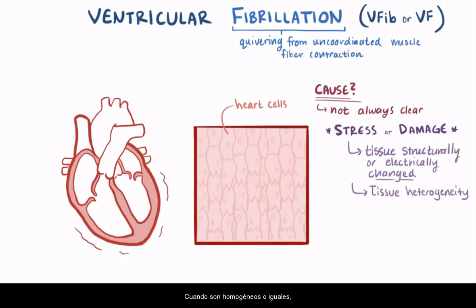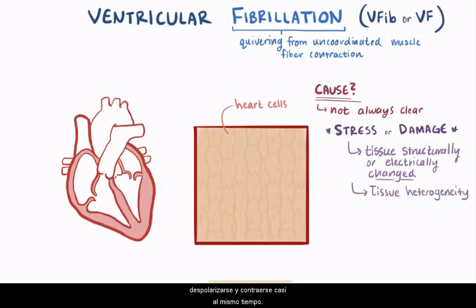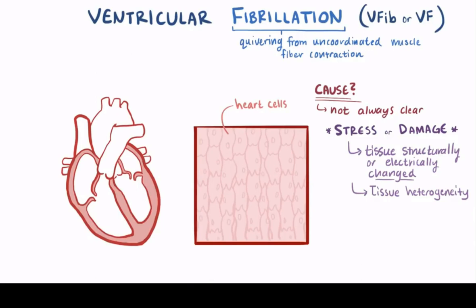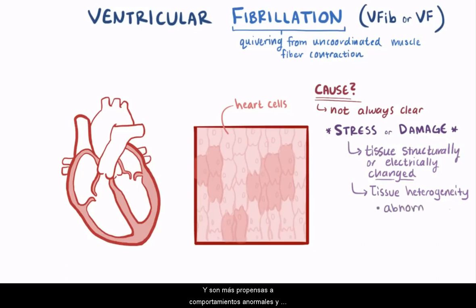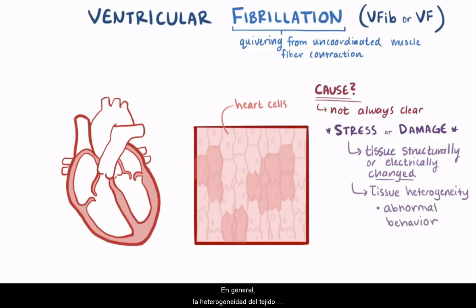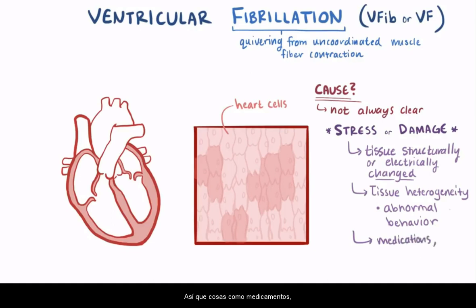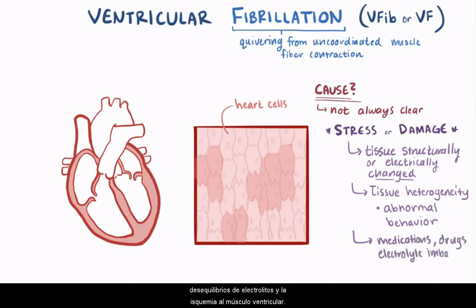When they're homogeneous, or the same, they all behave the same and can depolarize and contract at nearly the same time. When they have different electrical properties, they aren't as good at working together and are more prone to abnormal behavior and depolarizing on their own. In general, tissue heterogeneity can happen after something stresses the ventricular muscle — things like medications, illicit drugs like methamphetamine or cocaine, electrolyte imbalances, and ischemia to the ventricular muscle.